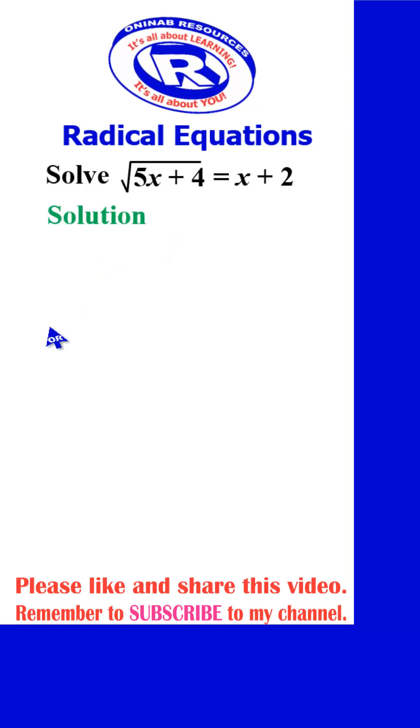In our solution, we're going to square both sides in order to remove the square root. So the left hand side will become 5x plus 4 is equal to x plus 2 all squared.